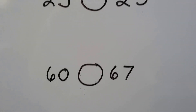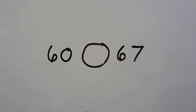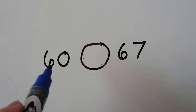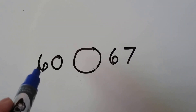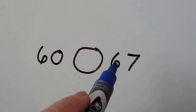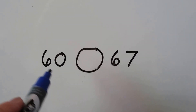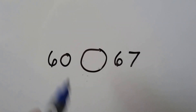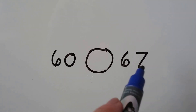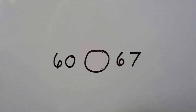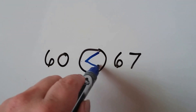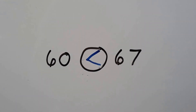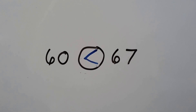Here we have 60 and 67. They both have the same number of tens — they both have six tens. But this has zero ones and that has seven ones. So 60 is less than 67.